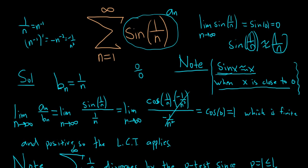because sine of x is approximately equal to x when x is close to 0. So 1 over n and the sine of 1 over n have the same growth rate. And that's why this is a good choice for your comparison series for the limit comparison test.